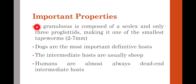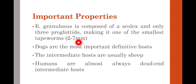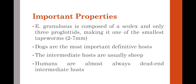We will focus only on Echinococcus granulosis as it is found in human beings, while Echinococcus multilocularis is very rare. Echinococcus granulosis is composed of a scolex and only three proglottids, making it one of the smallest tapeworms, merely two to seven millimeters in length. Dogs are the most important definitive host, while other canine family members are also definitive hosts. The intermediate hosts are usually sheep, though human beings can also be intermediate hosts.